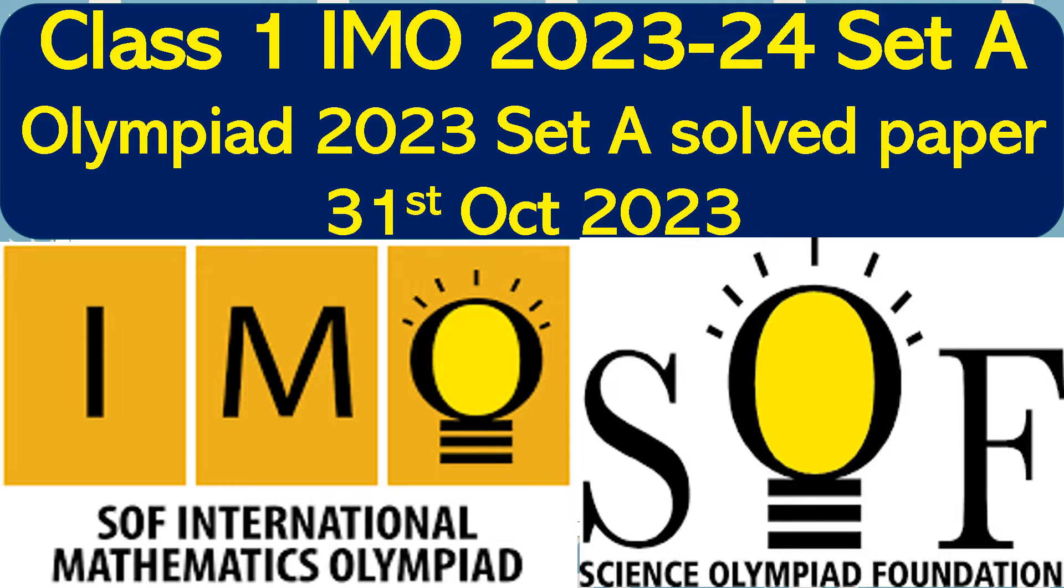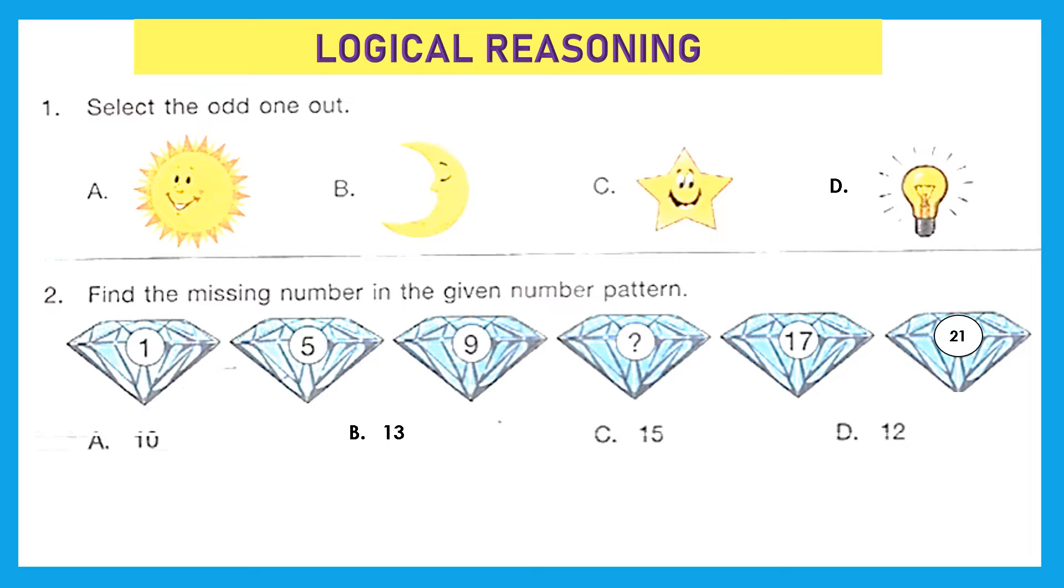We will solve today Class 1 IMO, that is Math Olympiad 2023 Set A question paper. Let's solve and find the answer key for the same. First section is logical reasoning. Question 1: Select the odd one out. Now here A is sun, B is moon, C is star, and D is bulb. So odd one out is D, bulb, because that is a man-made item; rest all are natural.